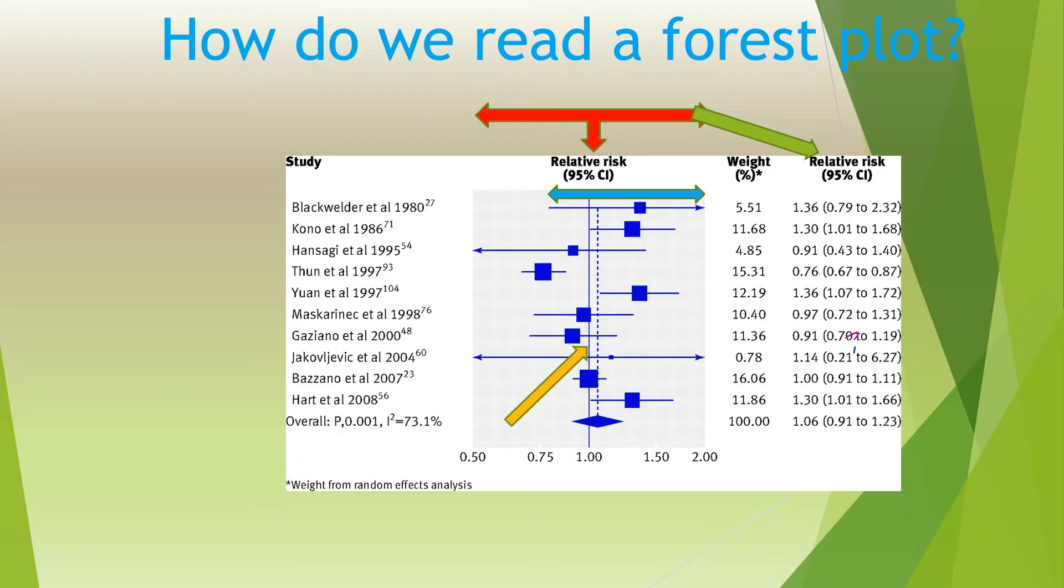If all of the horizontal lines cross the vertical line, it shows that all the studies were in agreement. If a horizontal line doesn't cross the vertical, it's an indication there were statistically significant differences between studies.